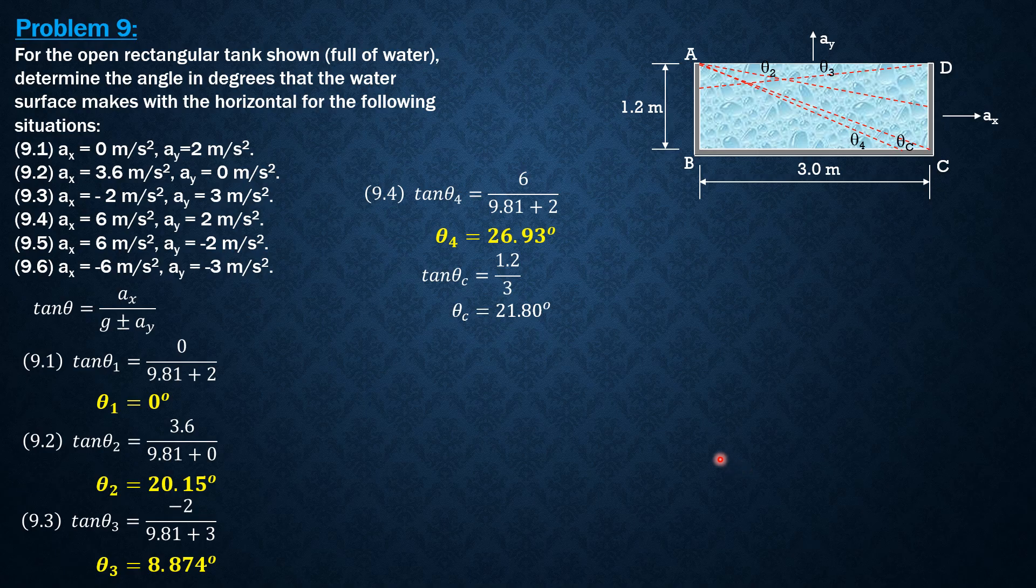Then 9.5, case 5, tangent theta 5 is equal to 6 over 9.81 minus 2, because ay is negative 2. So theta 5 is 37.53. It is again sloping up to the left but greater than theta c. So it's here crossing a. So this is theta 5.